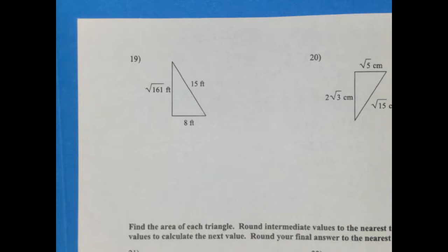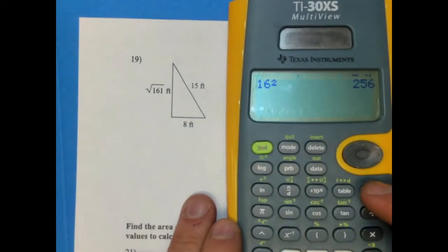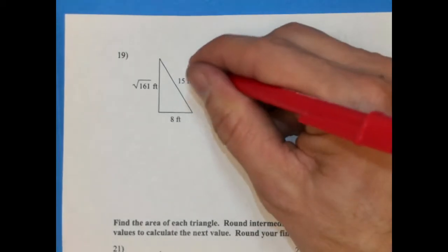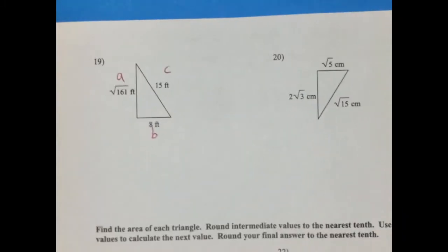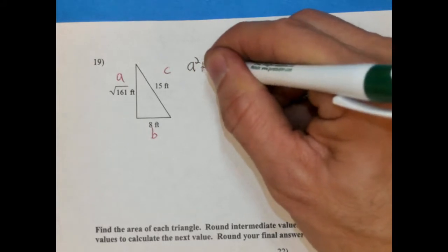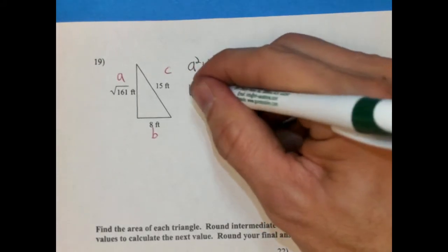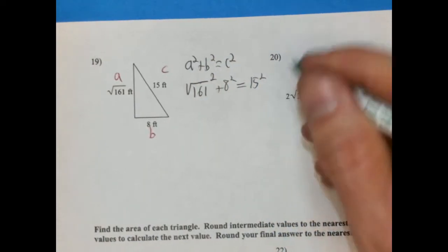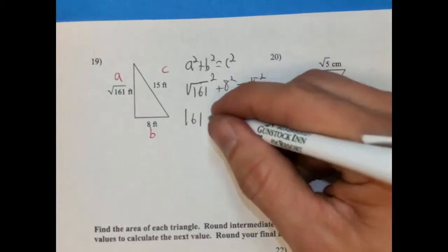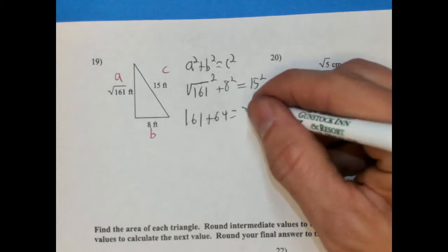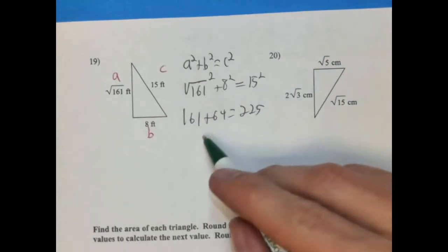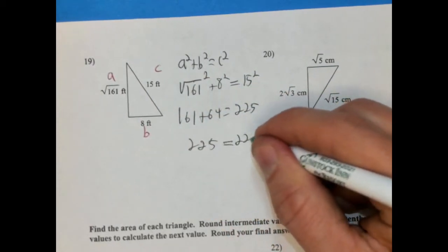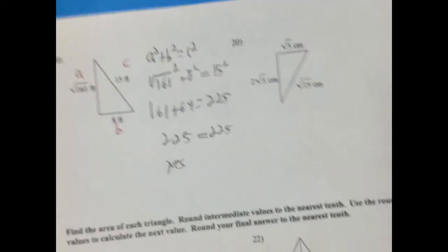Let's flip it over. Radical 161, 12 point something. So this is our C, our A, and our B. A squared plus B squared equals C squared. Radical 161 squared plus 8 squared equals 15 squared. So this will equal 161, this will equal 64, and this will equal 225. So this will be 225. So this actually is a right triangle. So yes.